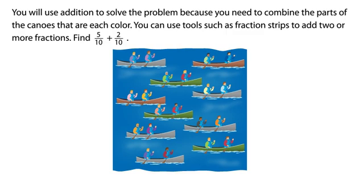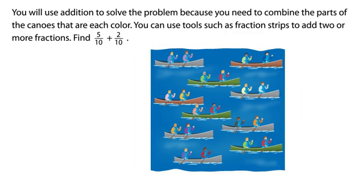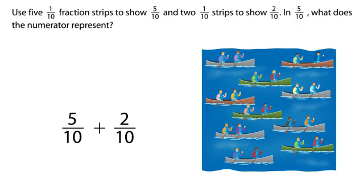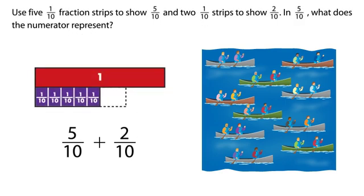You will use addition to solve the problem because you need to combine the parts of the canoes that are each color. You can use tools such as fraction strips to add two or more fractions. Find five-tenths plus two-tenths. Use five one-tenth fraction strips to show five-tenths and two one-tenth strips to show two-tenths.